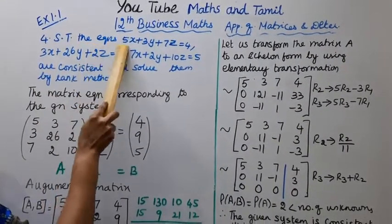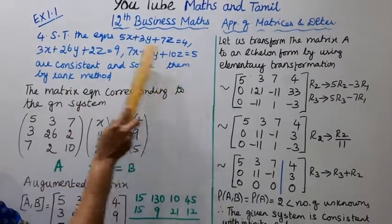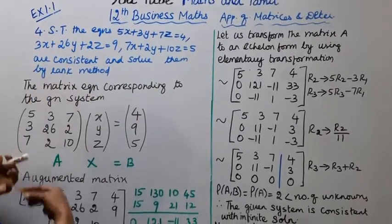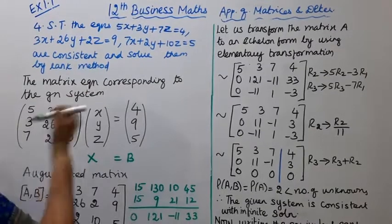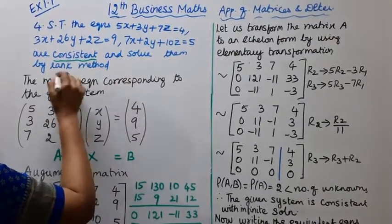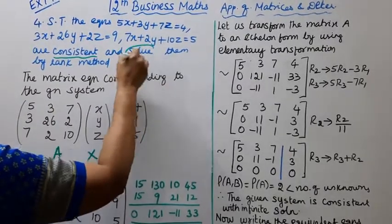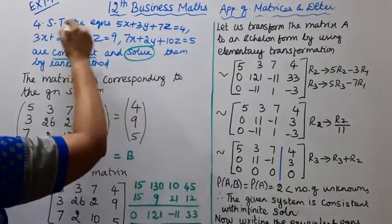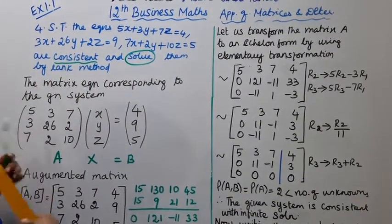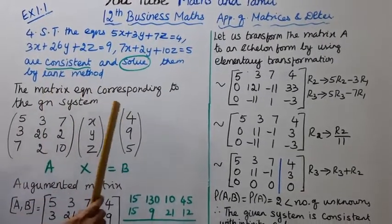Show that the equations — first equation, second equation, third equation — are consistent. We can prove it and solve them by rank method. Show that the equation is consistent and solve for X, Y, Z.